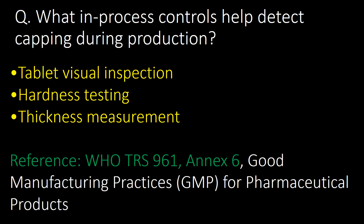Very important question: what in-process controls help to detect capping during production? Tablet visual inspection, hardness testing, and thickness measurement are the key in-process parameters that help to detect capping during production. Reference: WHO TRS No. 961, Annex 6.